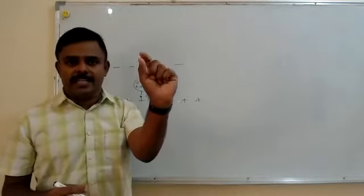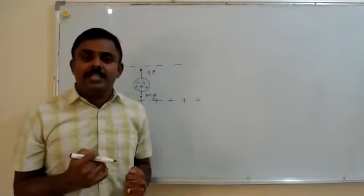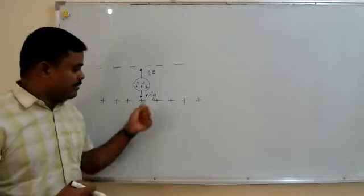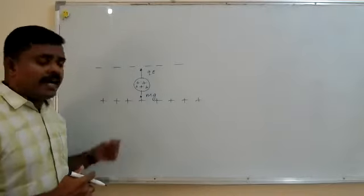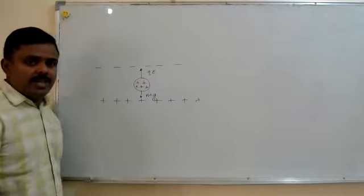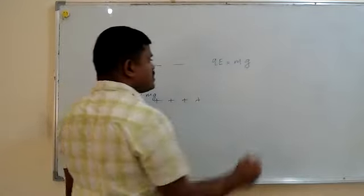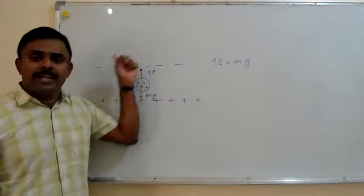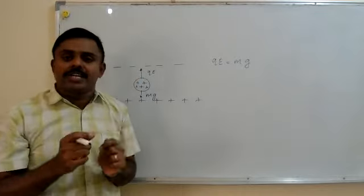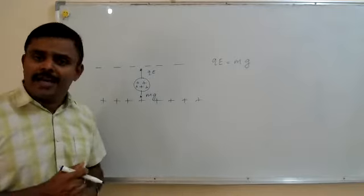The oil drop has to be kept stationary in space. When you place an oil drop, it tends to fall down because gravity is pulling it downwards — that force is mg. To balance this, we give charges to the drop. The positive plate repels the positive charge upward, and the negative plate attracts the positive charge upward, so both forces are in the upward direction. The net electrostatic force qE balances gravity mg, giving the condition qE = mg.